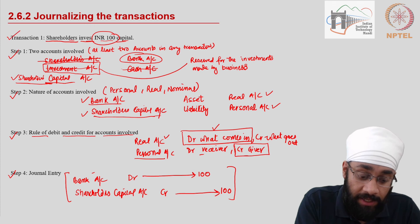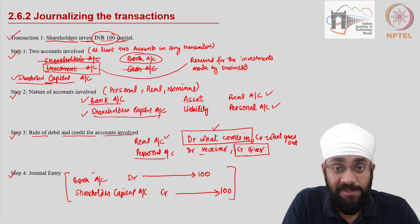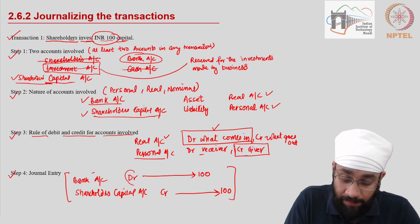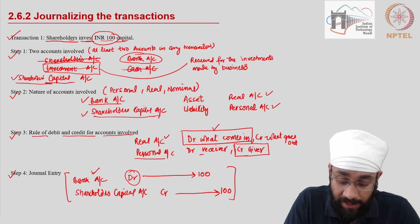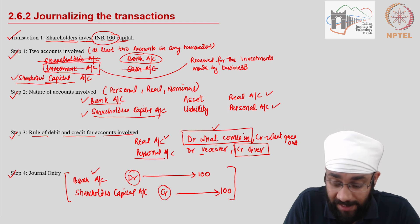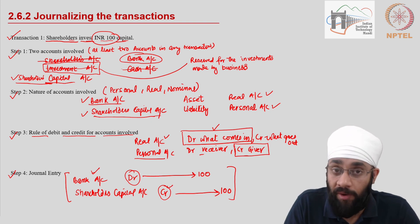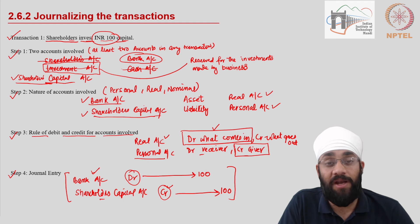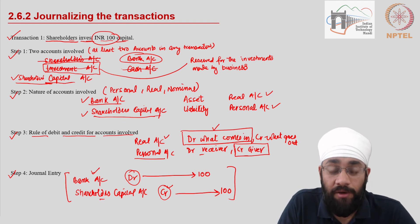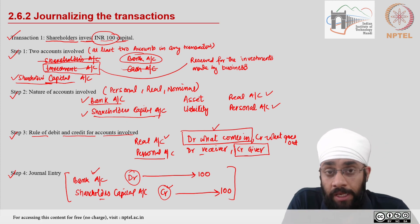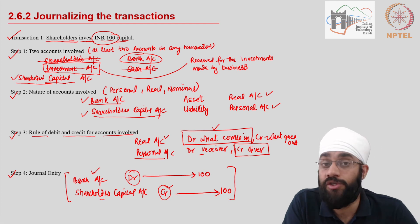Rather than writing in plain English — 'shareholders invest money in the business' — we say bank account debit and shareholders capital account credit. This means the business's claims on bank are going up because money is coming into the bank account, and shareholders' claims on the business are going up as well. That is how you record transactions in the first book of accounting, which is called journal. I'll continue with the rest of the transactions in the next video.